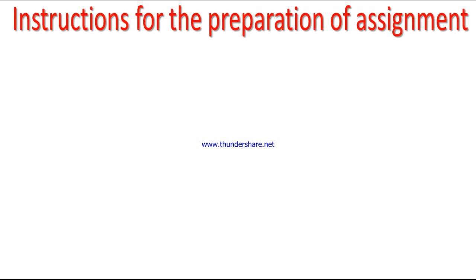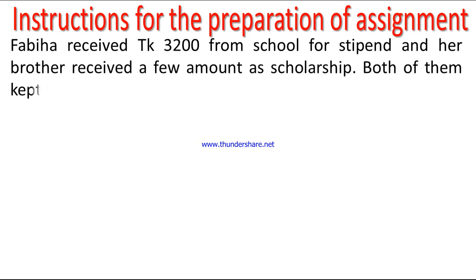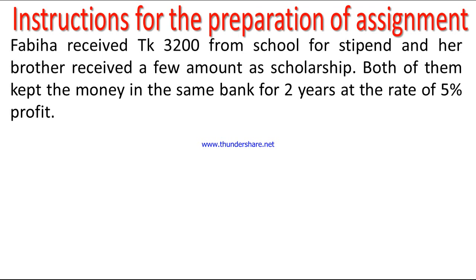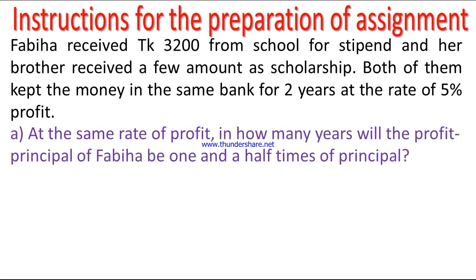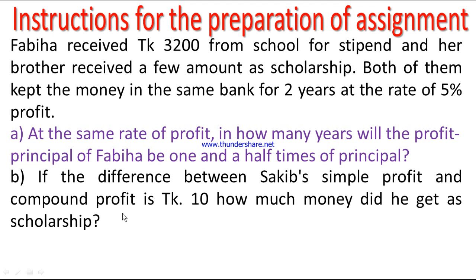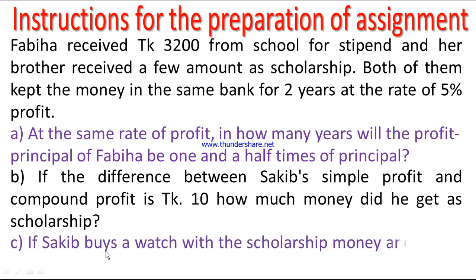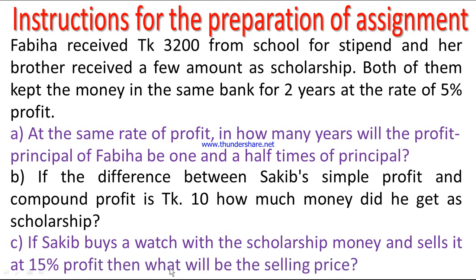Assignment instructions: Fabiha received three thousand two hundred taka from school for stipend, and her brother received a few amount of scholarship. Both of them kept the money in the same bank for two years at the rate of five percent profit. Question A: At the same rate of profit, in how many years will the profit-principle of Fabiha be one and a half times the principle? Question B: If the difference between Sakif's simple profit and compound profit is 10 taka, how much money did he get as a scholarship? Question C: If Sakif buys a watch with the scholarship money and sells it at 15 percent profit, what will be the selling price?